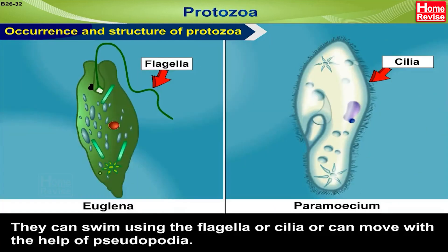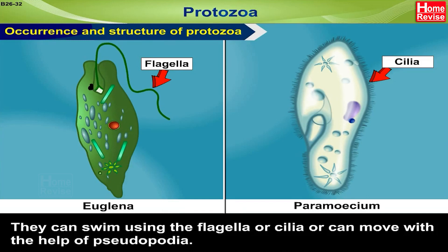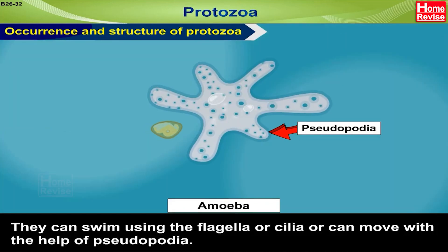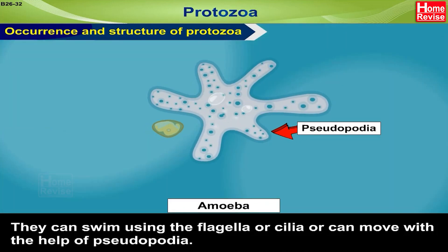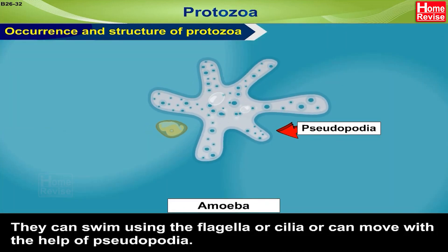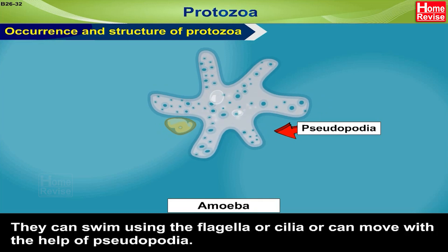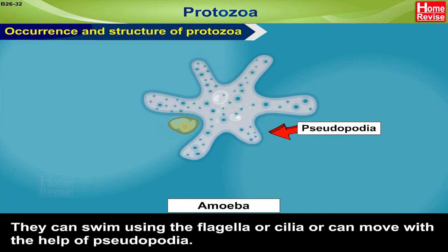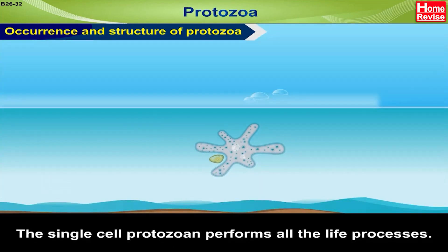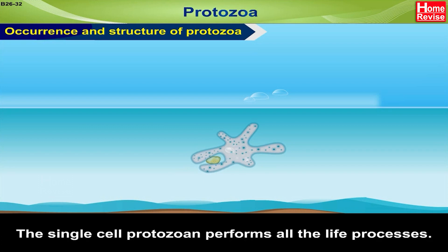Protozoa can swim using flagella or cilia, or can move with the help of pseudopodia. The single-celled protozoan performs all the life processes.